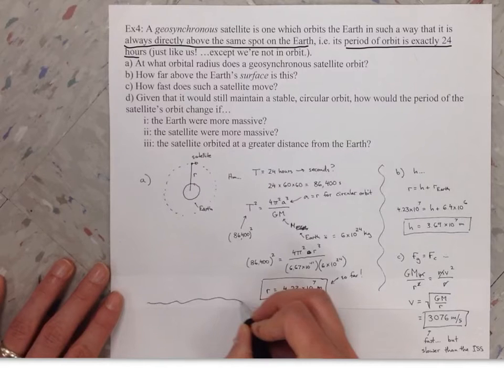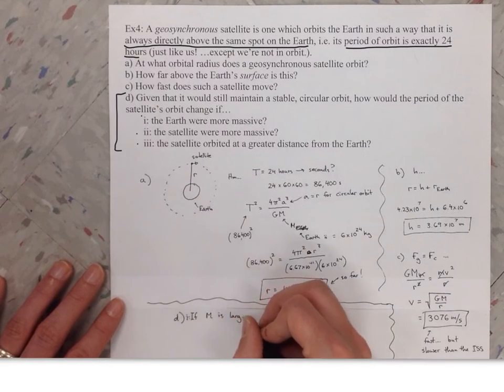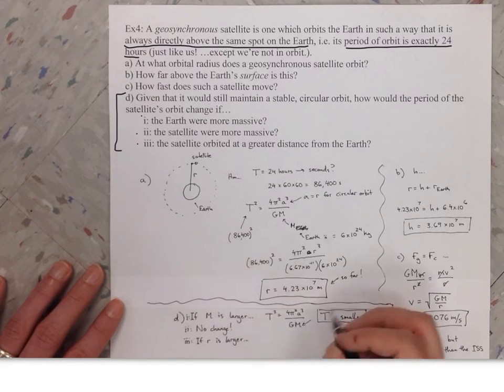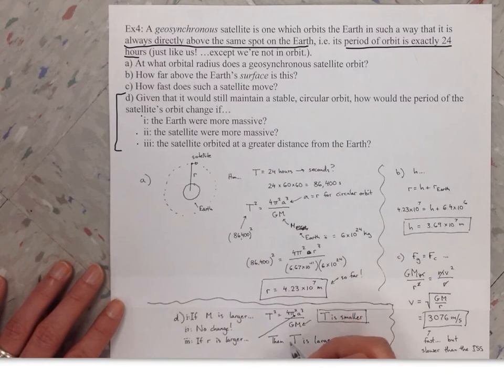The last part of this question I've put in here because all the time we're going to ask about things like conceptual questions. There's no math involved in Part D. It just wants to know how the period, that's the capital T, would be different if we change some things. Part 1 asks what if the Earth were more massive. Part 2 asks what if the satellite were more massive. And Part 3, what if it didn't orbit at the distance we calculated in Part A? What if it were further away? For all parts of that question, we're going to answer it using Kepler's Third Law.